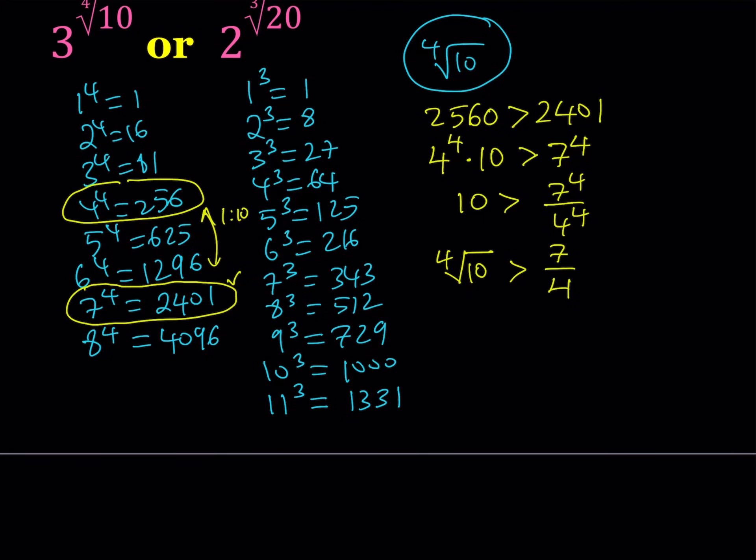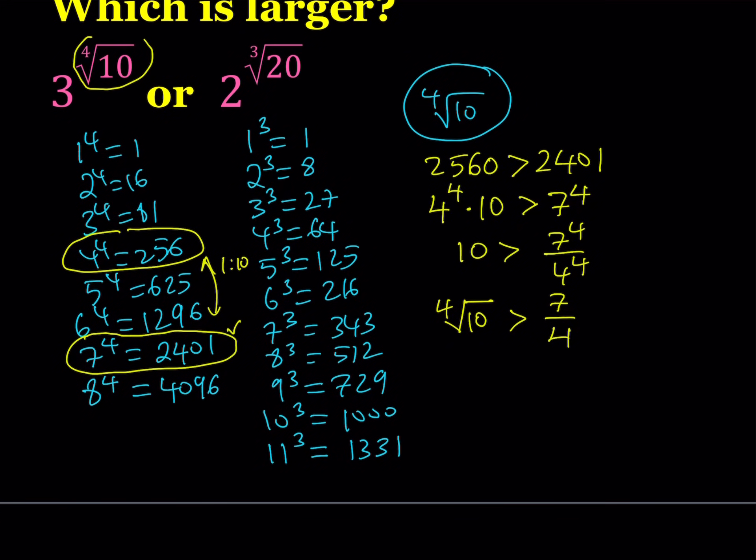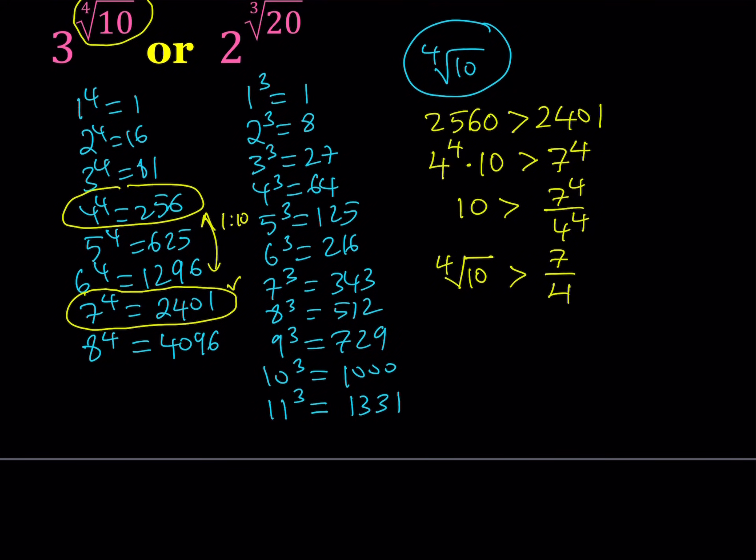But, guess what? We have that number in the exponent, right? So, it's 3 to the power something. Here's what I'd like to do. I want to write this as 3 to the power 4th root of 10. And since 4th root of 10 is greater than 7/4, if I raise 3 to the power of both sides, then I get the following inequality. 3 to the power 4th root of 10 is greater than 3 to the power 7/4. So, my goal was to write this exponential as a number with a fractional exponent. So, we did it with the 4th power.